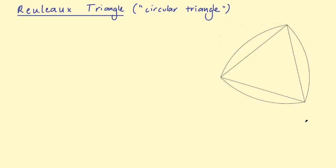There are a lot of cool things about this shape. One is that it has constant width, just like a circle does, and they use these types of shapes that have constant width to make coins to save material. There are a lot of other cool facts about Reuleaux triangles and shapes with constant width — I'll link a video by Mathologer in the description if you want to check that out.